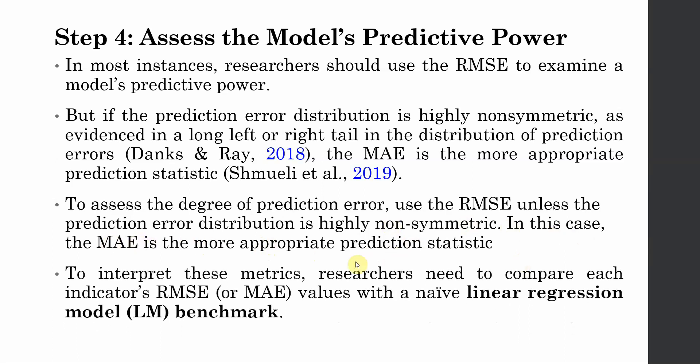In summary: first check your histograms for left and right tails to determine whether to use RMSE or MAE. Then compare PLS MAE with LM MAE, or PLS SCM RMSE with LM RMSE. You want PLS values to be lower. Using the COUNTIF formula in Excel makes counting easier. I hope this session helped you understand PLS Predict in SmartPLS 4. Thank you very much.